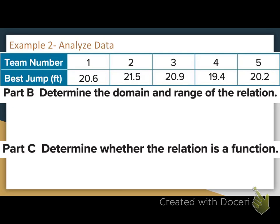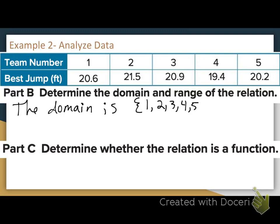Part B says determine the domain and range of the relation. The domain is the team numbers. I would write the domain in squiggly brackets — the domain is {1, 2, 3, 4, 5}, just my team numbers — my set of x values.